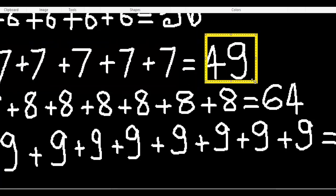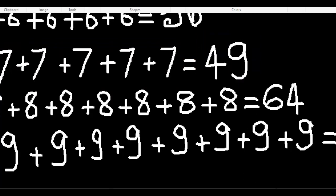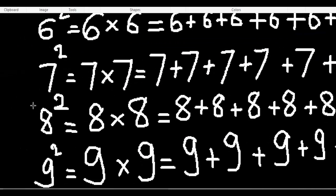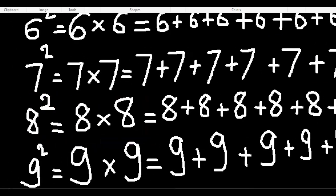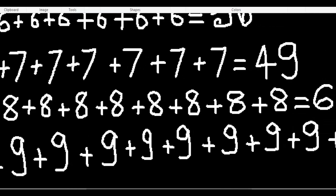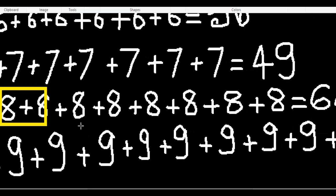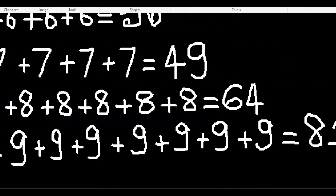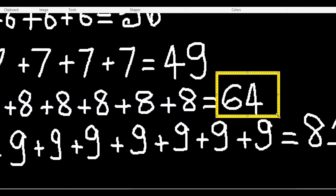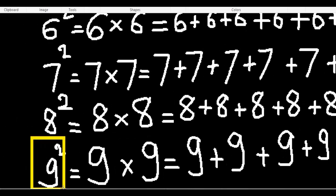Eight squared means eight times eight. That is eight plus eight plus eight plus eight plus eight plus eight plus eight plus eight, and that equals 64.